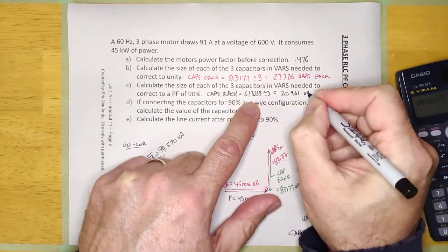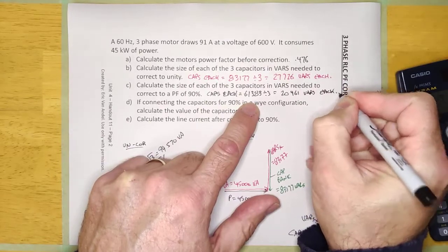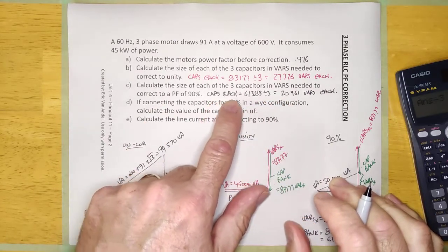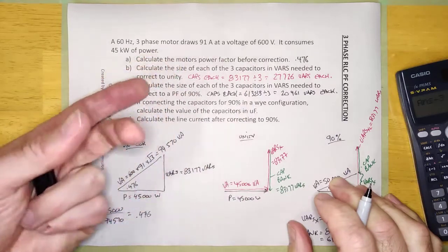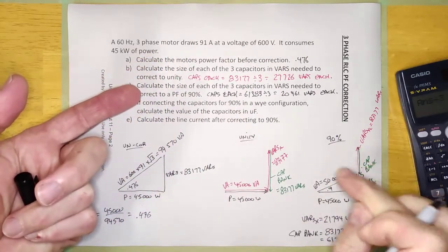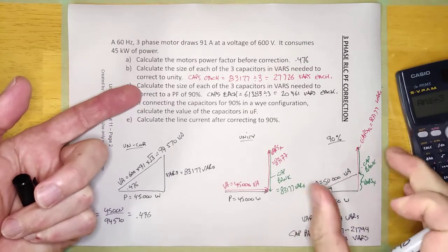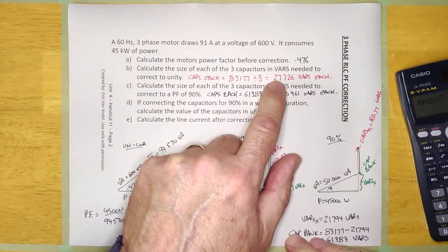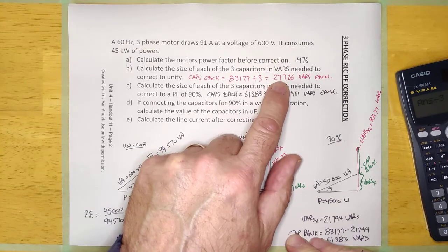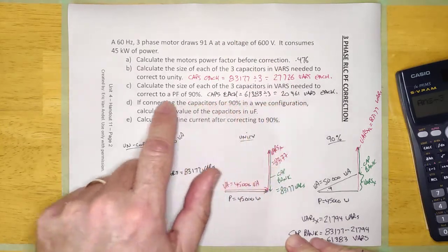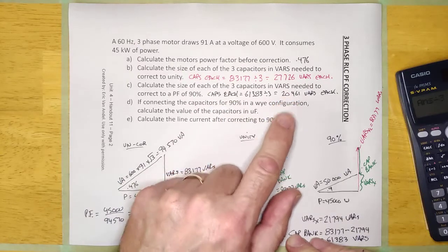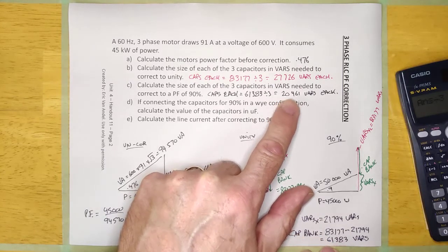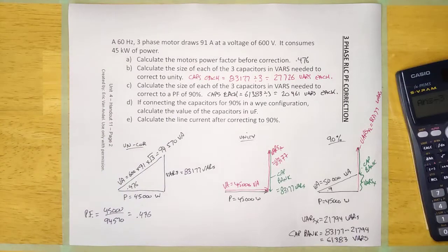We're going to stop here and I'll finish the last two questions in the next video. My capacitor calculation is the same as single-phase, except we're calculating a three-phase bank of capacitors, so I divide by three. If correcting to unity, order three 27,726-VAR capacitors. If correcting to 90%, order three capacitors from that bank and connect them three-phase in parallel with the load. Come back in a second — we'll do D and E.